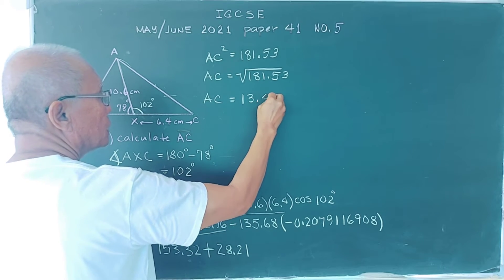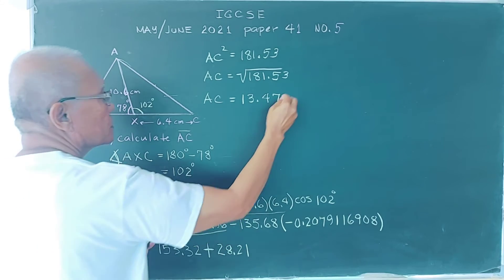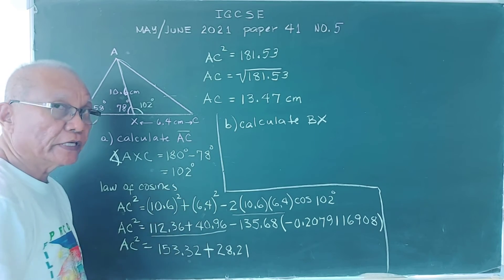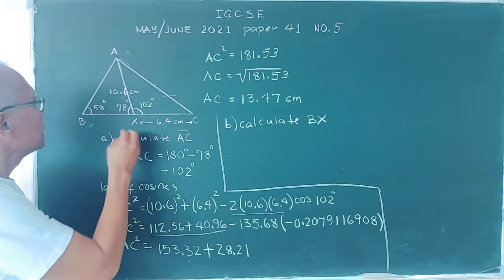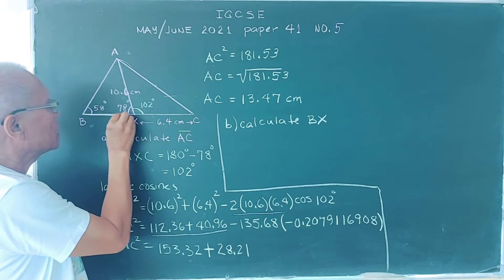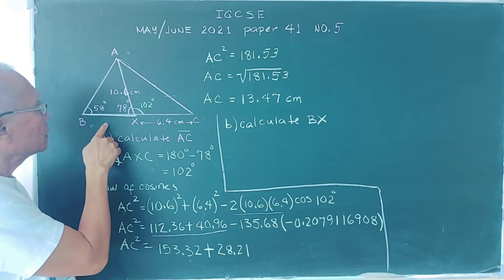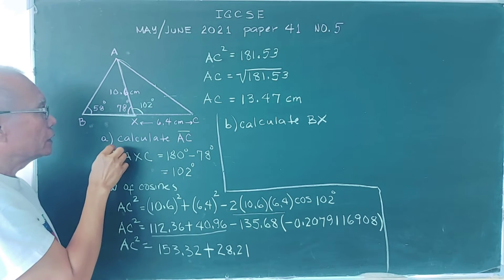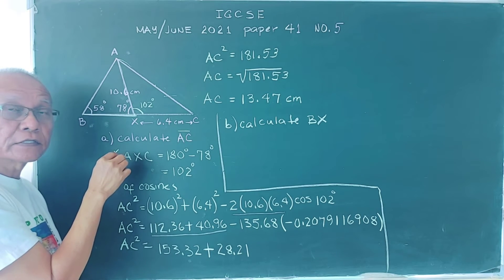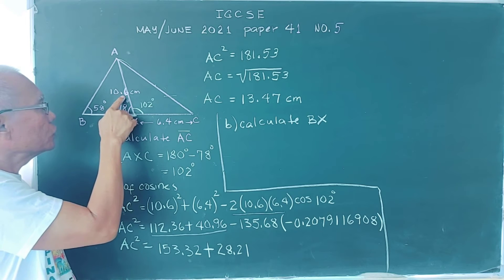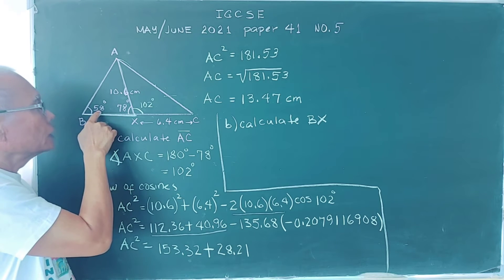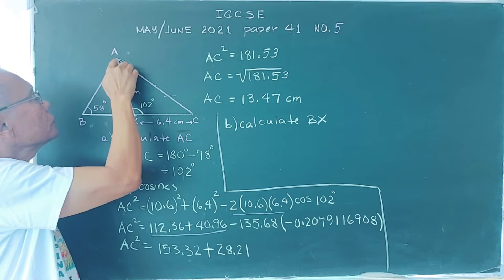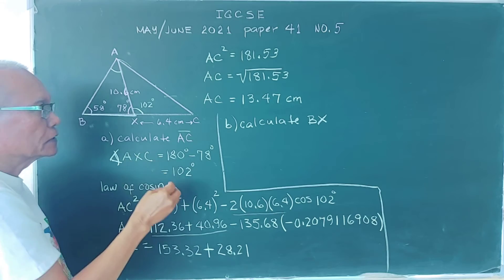So our AC is equal to 13.47 centimeters. Now for part B, calculate BX. BX is the unknown side in triangle ABX. We can see that we have side AX and some angles, so we can use the law of sines — but we first need to find angle BAX.